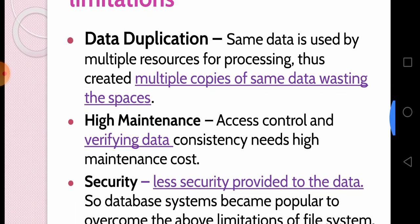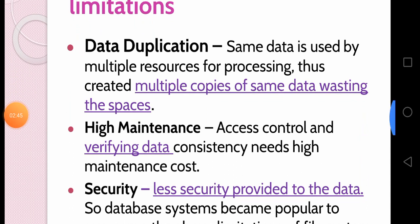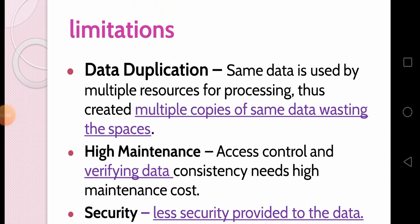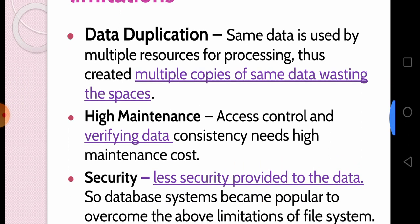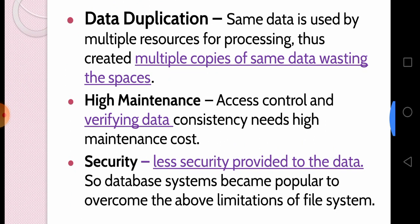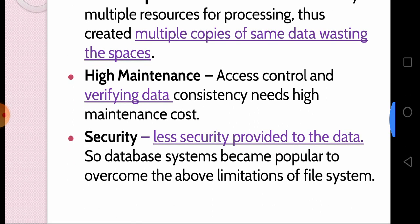Next, we move to limitations of file systems. There are three topics: data duplication, high maintenance, and security. Data duplication means multiple copies of the same data wasting storage space. High maintenance means access control and verifying data consistency needs high maintenance cost. Security: less security is provided to the data. DBMS became popular to overcome these limitations of the file system.